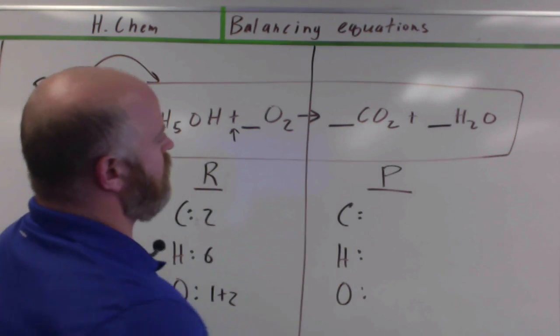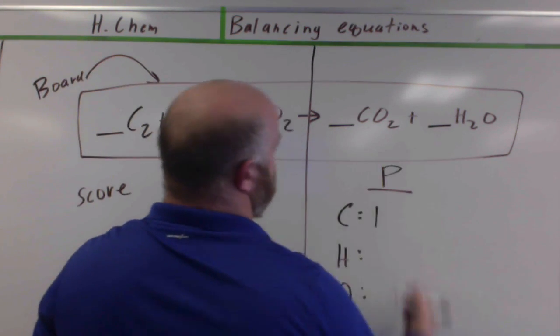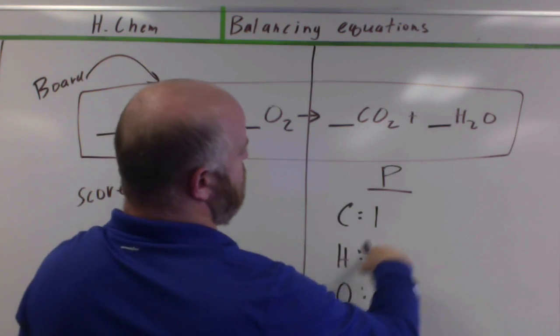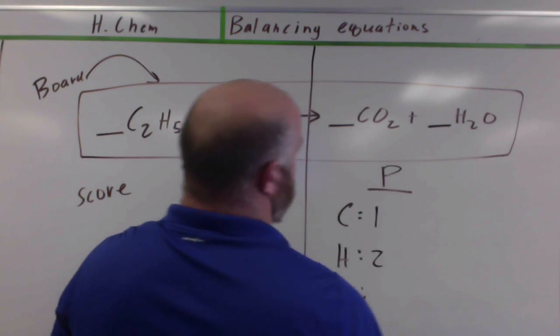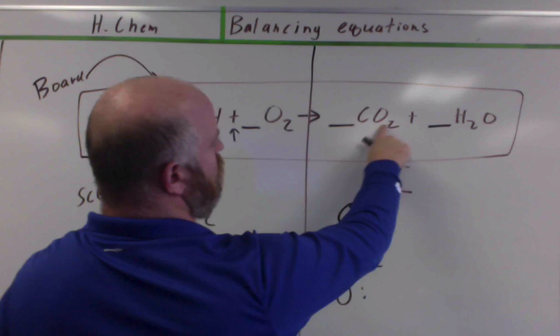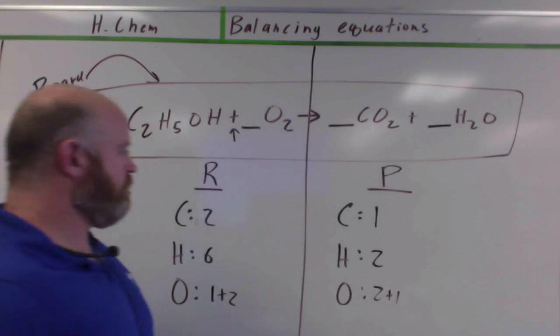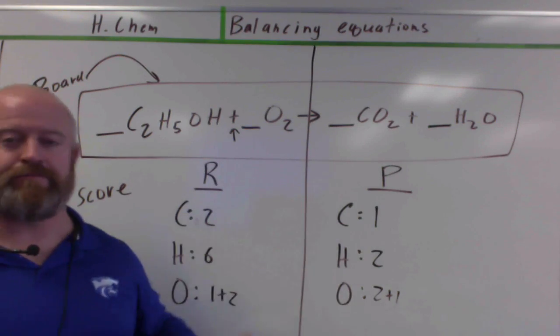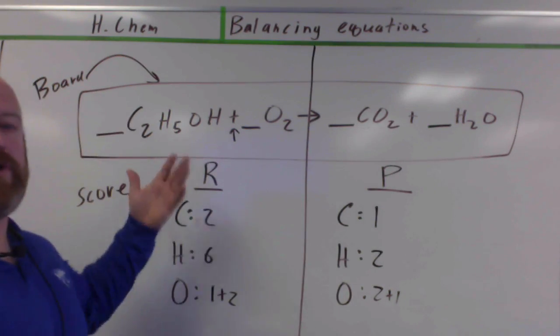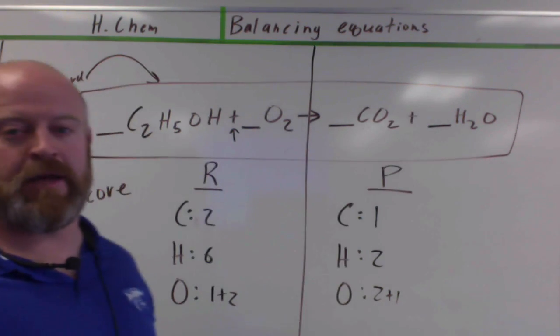On the product side, I have a carbon, so I only have one. I have hydrogen. Again, I have two. And then I have two plus one for my oxygens. So right now, if you look, we have two carbons, we have one carbon. They're not balanced. So what do you want to do in your board to make them balanced?